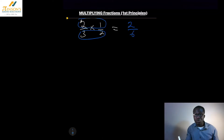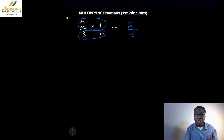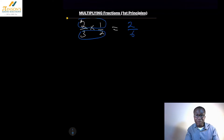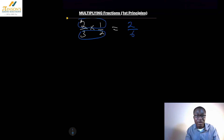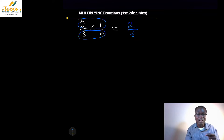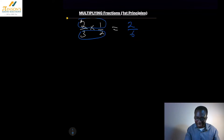Of course we could simplify our answer. Now let's look at why this works all the time. Remember: multiplying fractions — multiply across the top and multiply across the bottom. The numerators are at the top, the denominators are at the bottom.